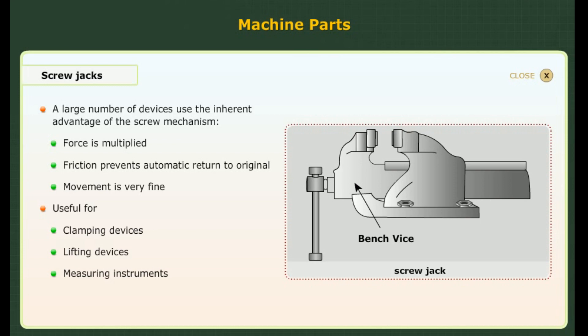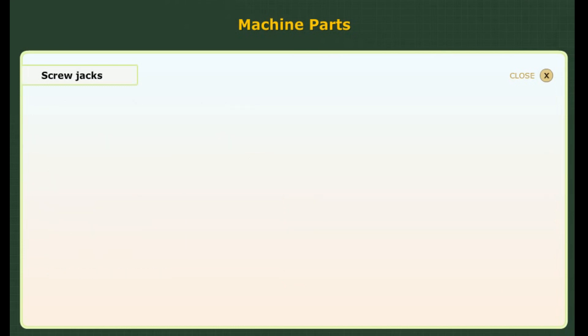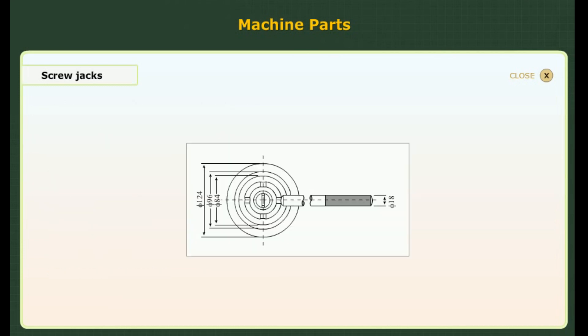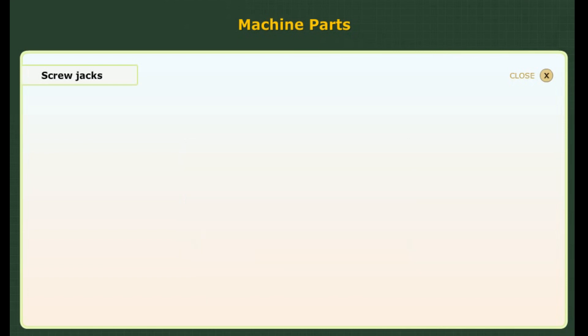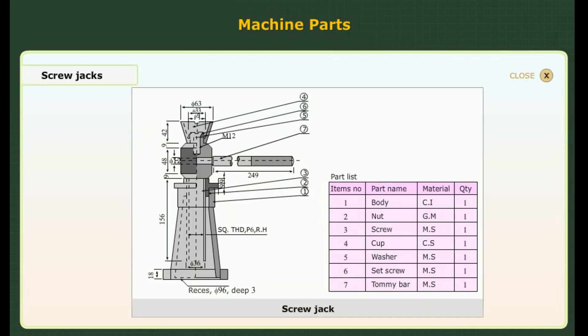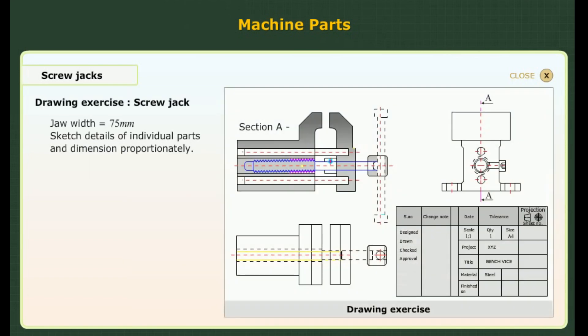Scissor type screw jack is commonly used for servicing of automobiles. An assembly drawing of a screw jack is given here. Drawing exercise for the screw jack: the figure shows a bench vise where the clamping force is applied by a power screw.